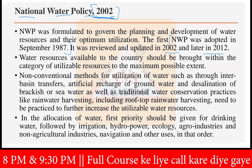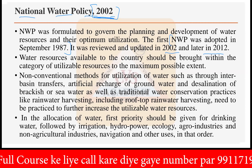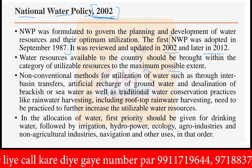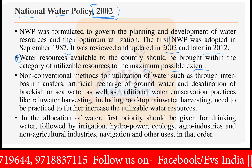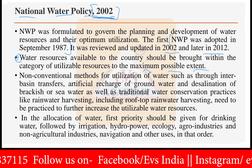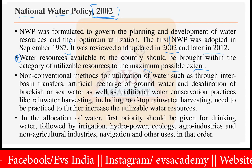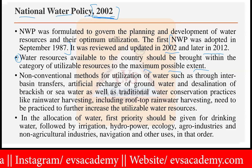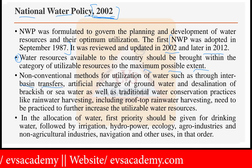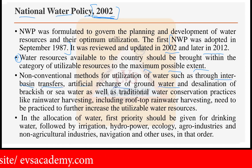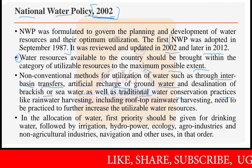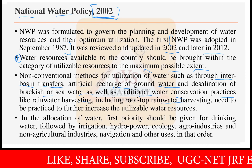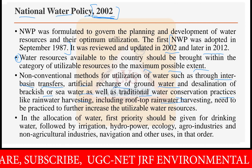The first objective of the National Water Policy is that water resources available to the country should be brought within the category of utilizable resources to the maximum possible extent — all water projects should be utilized well. Non-conventional methods such as inter-basin transfers, artificial recharge of groundwater, desalination of seawater, and traditional practices like rainwater harvesting including rooftop rainwater harvesting should be practiced to increase utilizable water resources.